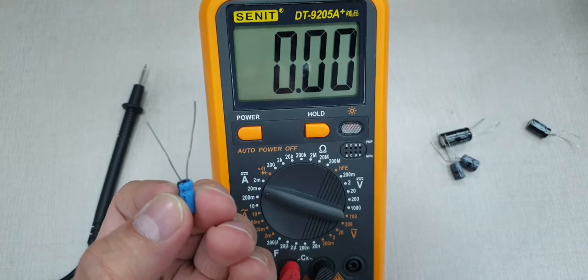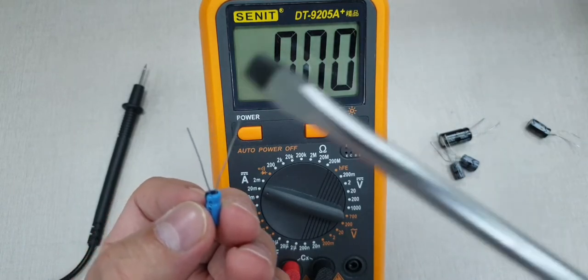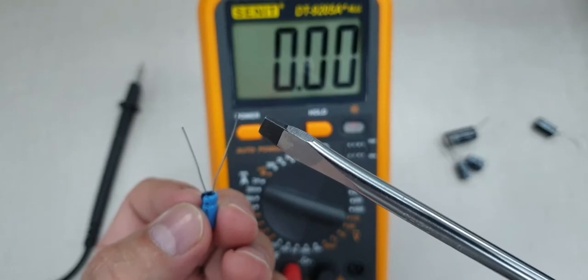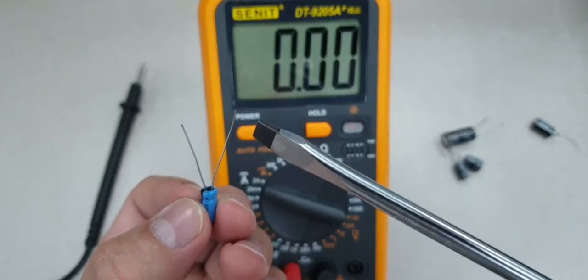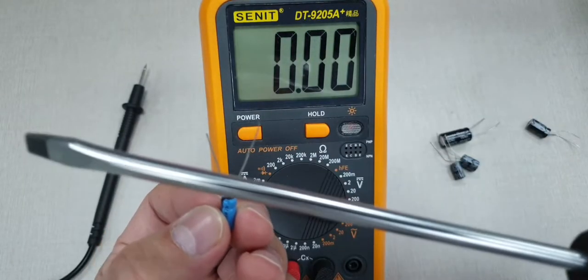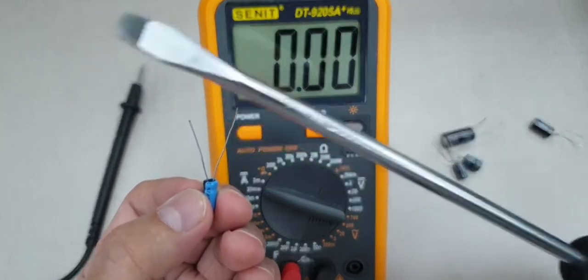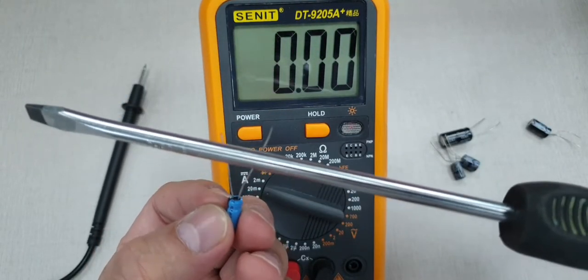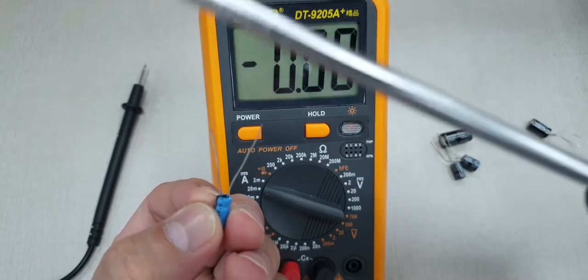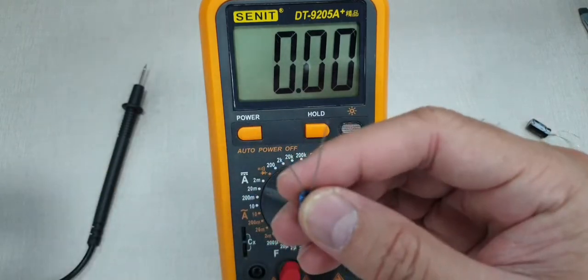Before you do any testing for any electrolytic capacitor, you must short the negative and positive feet connectors so we can get an accurate result. To short them, you just need a regular screwdriver and short these two leads like that. Once it's shorted, we can now do the testing.